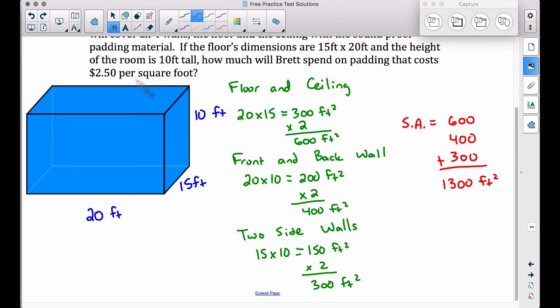Well, one square foot is $2.50. He does not have one square foot. He's got 1,300 square feet. He's going to burn a hole in his wallet. I mean, one square foot is $2.50. Well, he's getting 1,300 of them. The shortcut here is to multiply there. 1,300 square feet times $2.50 per square foot. He's going to spend a total of $3,250.